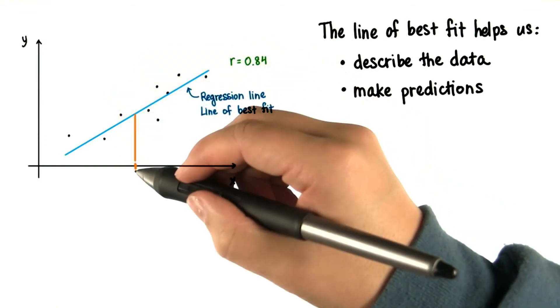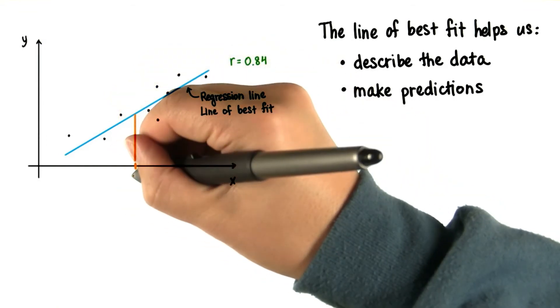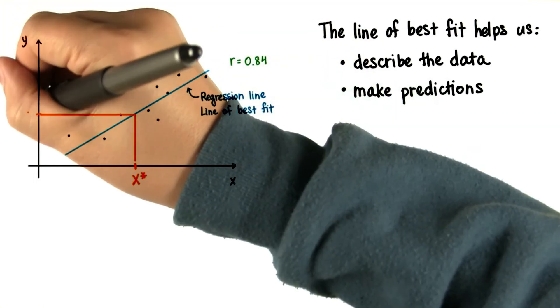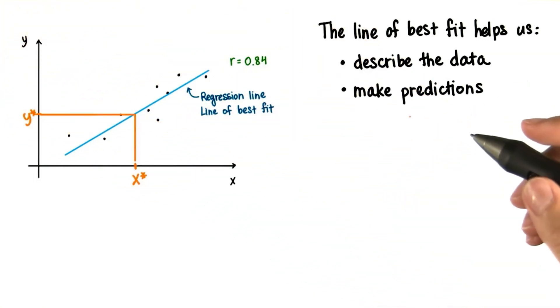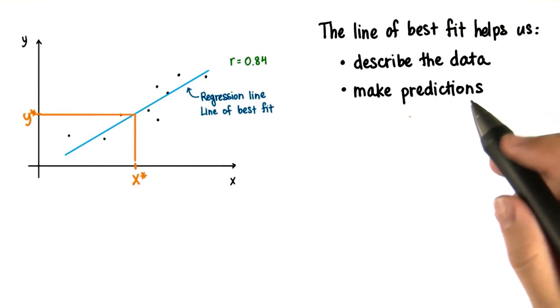By knowing the equation, we can plug in this x value, say x star, and find the corresponding y value, y star. Our predictions won't be perfectly accurate, but we can often get a fairly good estimate for the value of y.